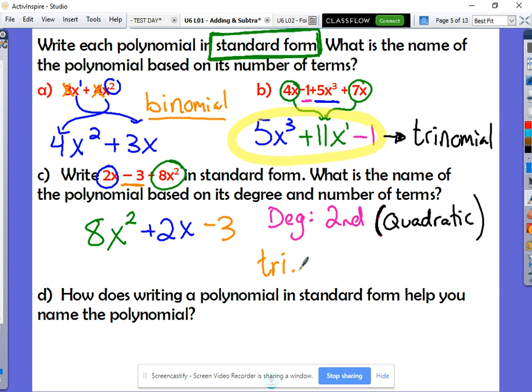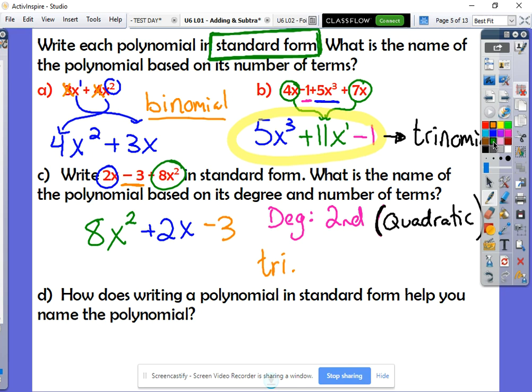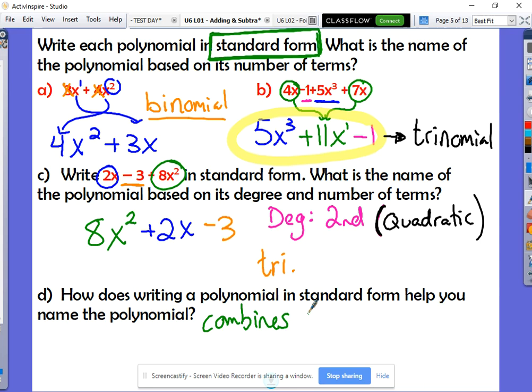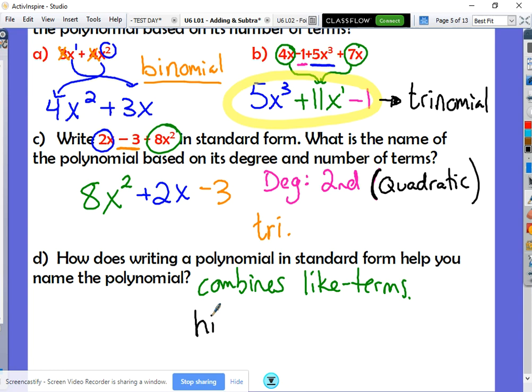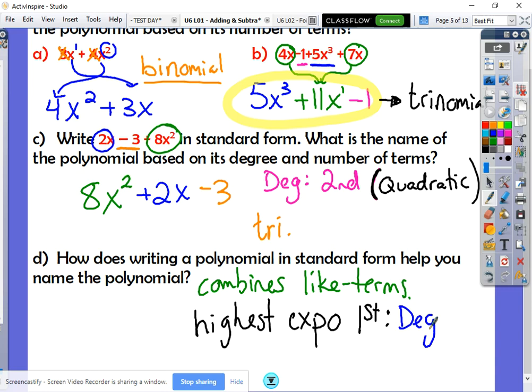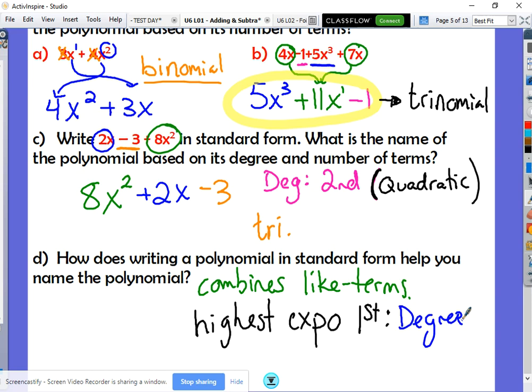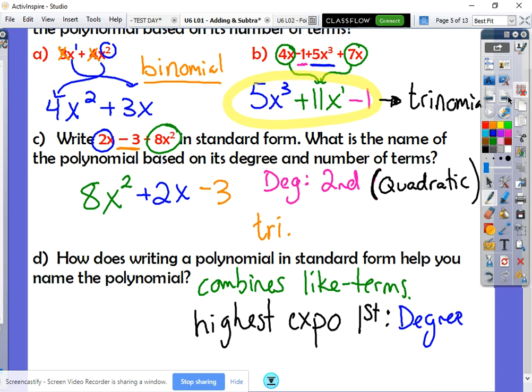So the question here is why does writing a polynomial in standard form help you name the polynomial? Well, writing a standard form for two reasons. One, it combines like terms. So we've got to make sure we combine like terms first. That's going to be important before we name it. So standard form does that. And two, it also puts the degree. It puts your highest exponent at the beginning. Your highest exponent comes first. And because it comes first, that helps me to identify the degree of my polynomial. If the highest exponent was somewhere way down the line, it might be hard to find. And you may not identify your degree correctly. So that's kind of why we bother doing this in the first place.